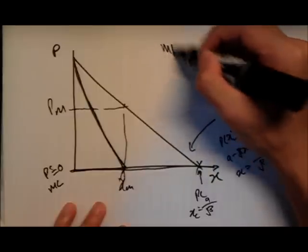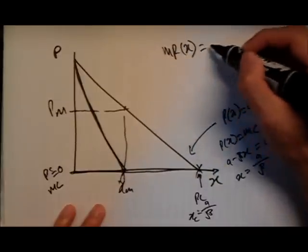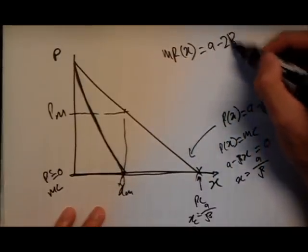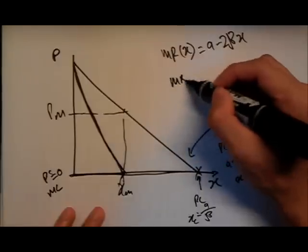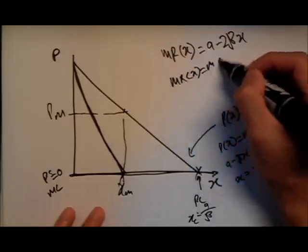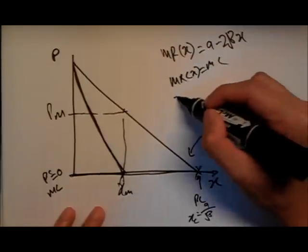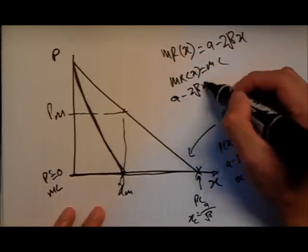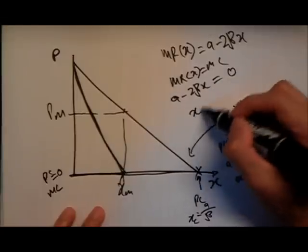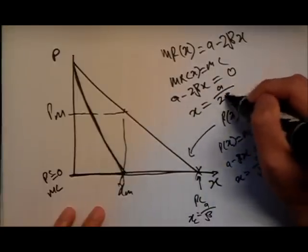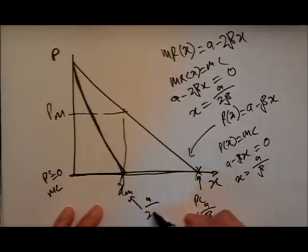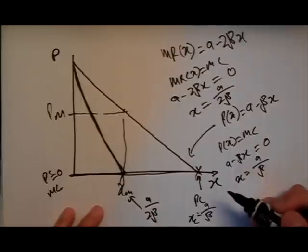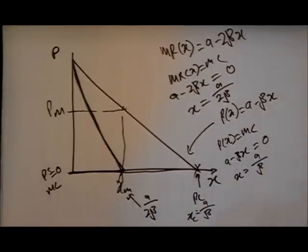You know that the formula for the marginal revenue is y minus 2bx because it's two times steeper. Same thing, MR equals to MC. So a minus 2bx equals to zero. You will get this. This is where the monopolist is going to be producing. This is the quantity.